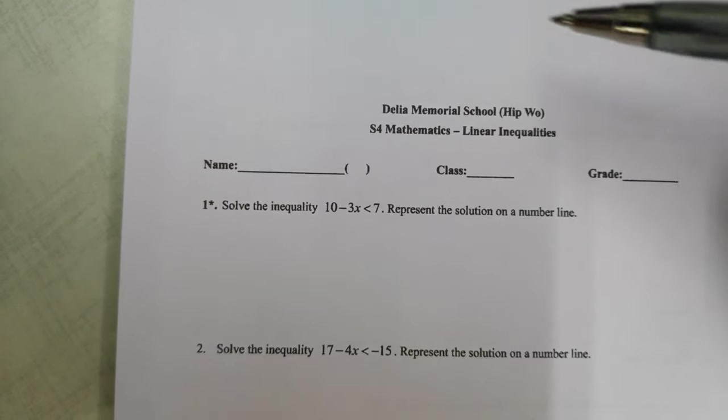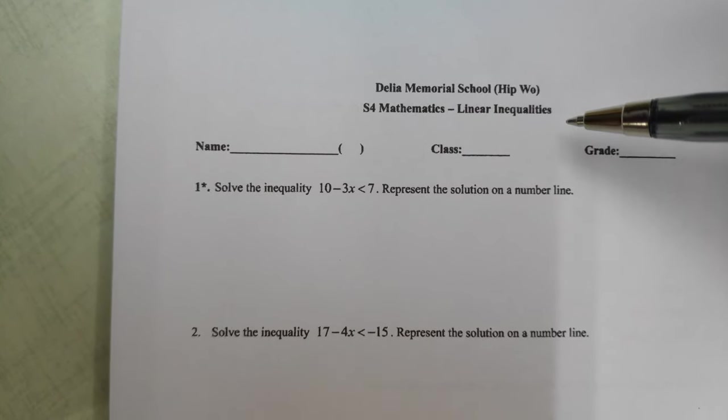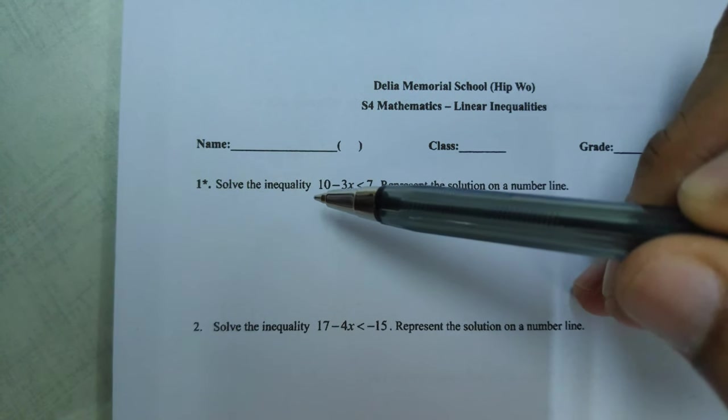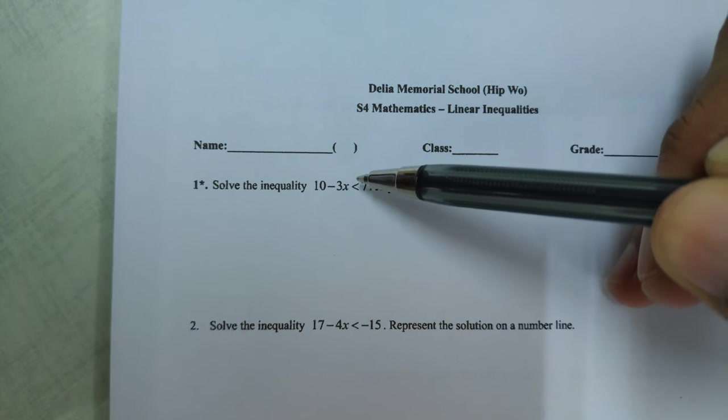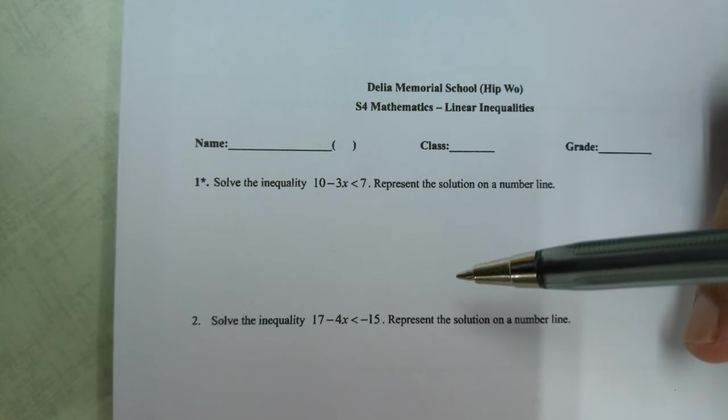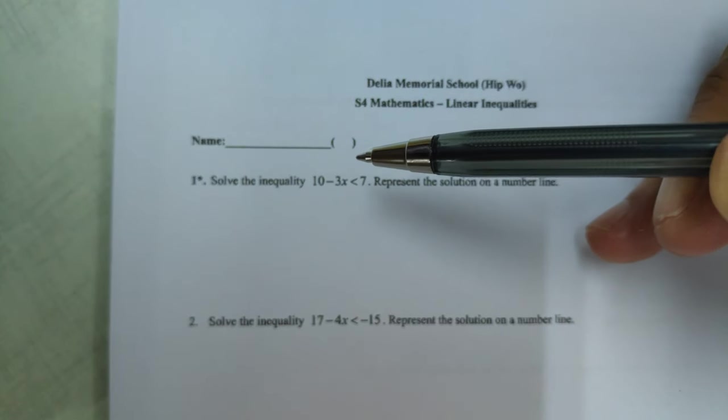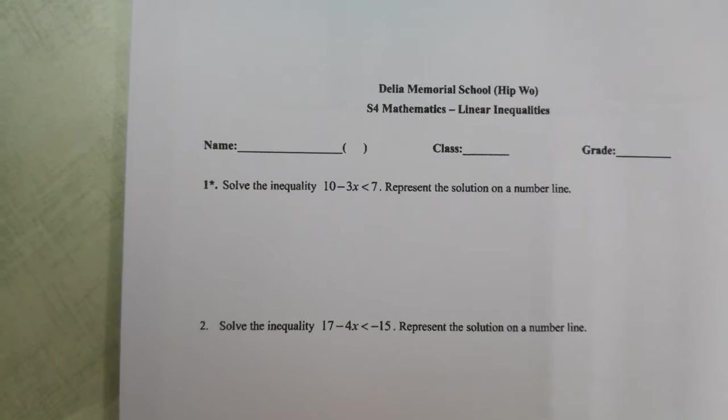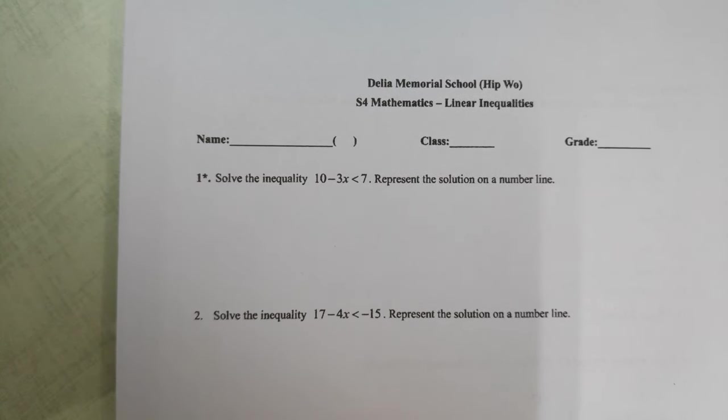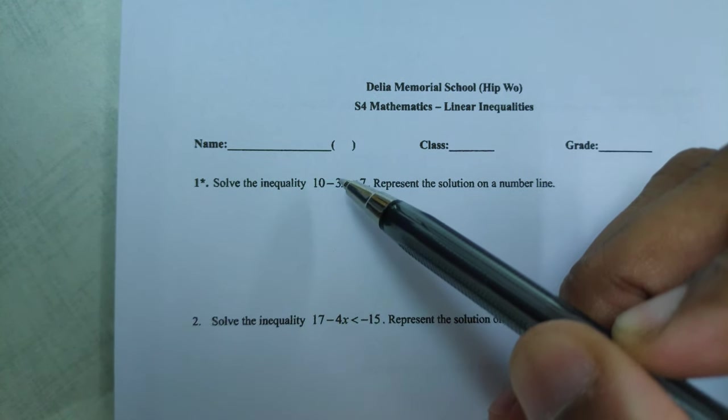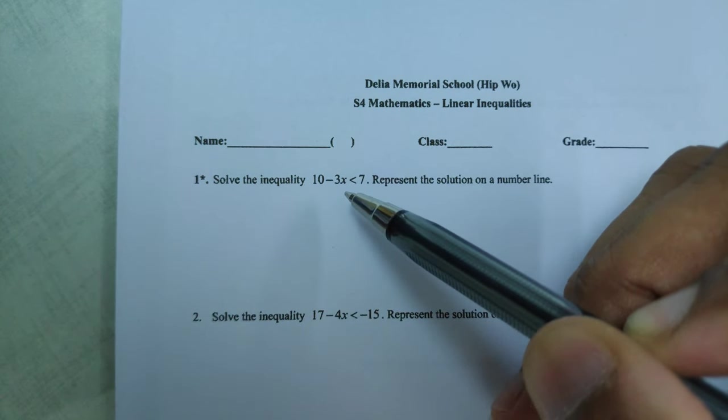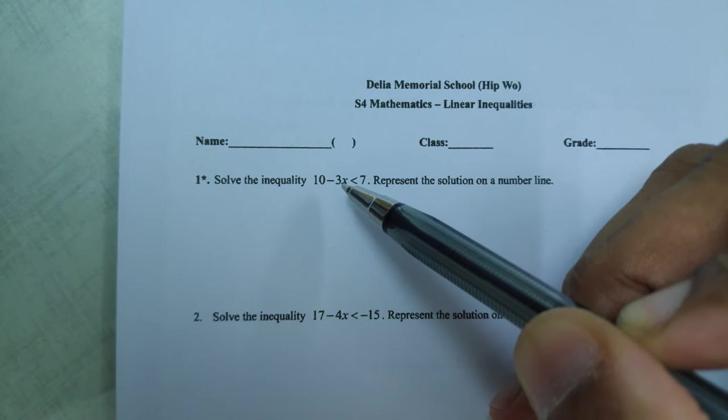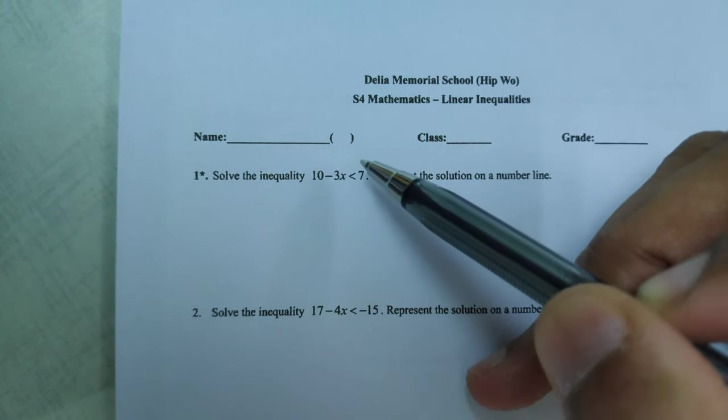When we are handling linear inequality equations, we basically handle them the same way as if it was an equal sign. But the only thing we have to make sure is we always try to make the unknown, the x, the coefficient to be positive. So in this case, because it's negative 3x, if we add it to the other side...